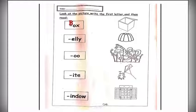The first one here: BOX. Start with letter B. The next one: JELLY. Start with letter J.